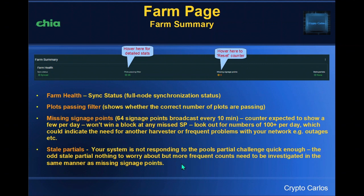The final fourth section of this header is stale partials. This is where your system is not responding to the partial challenges quickly enough. Nothing to worry about if you're getting the odd stale partial — it's very similar to what you might see on your pool pages. But if you're getting more frequent ones and this is showing a consistent problem, you need to investigate it. Much like signage point problems, it could be network issues, outages, or an overburdened harvester.